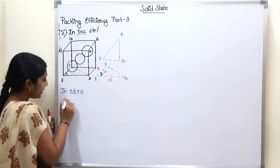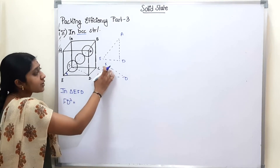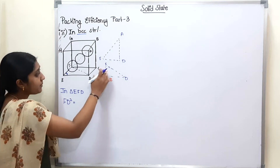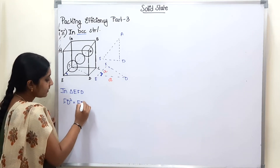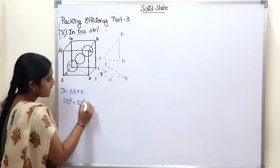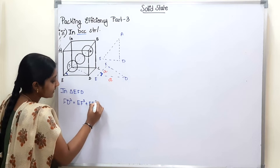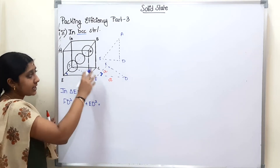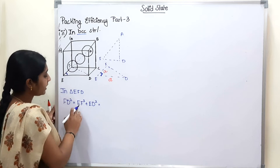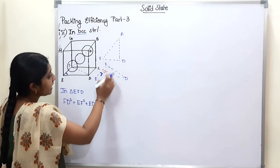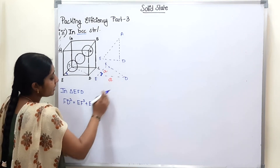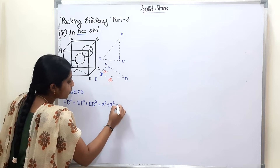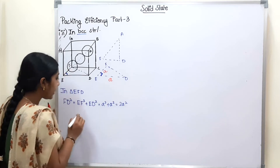So, hypotenuse squared is equal to the sum of the squares of the two adjacent sides. Then EF squared plus ED squared. What is EF? It is A. And ED? It is A. So A squared plus A squared equals 2A squared. Therefore FD squared equals 2A squared.